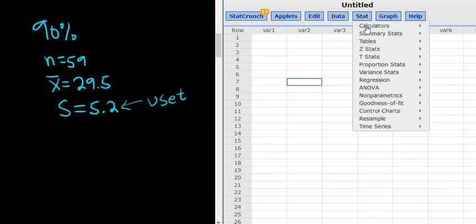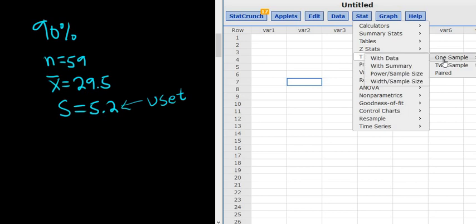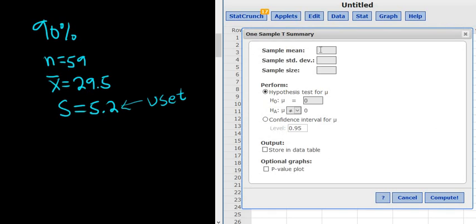So it's stat, t stats, one sample, and then we have a summary of the data. So we pick with summary. The sample mean in this case is 29.5. The sample standard deviation is 5.2. And the size is 59. And this is a confidence interval. And we change it to 90.